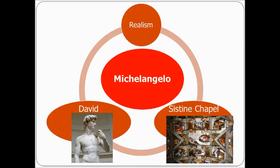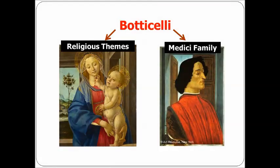Then we have Michelangelo. Michelangelo painted and sculpted in realism. He painted the ceiling of the Sistine Chapel and sculpted the famous sculpture of David. Botticelli was famous for two things: he painted many religious themes, and he painted that famous family of Florence, the Medicis.